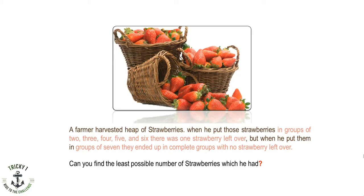A farmer harvested a heap of strawberries. When he put those strawberries in groups of two, three, four, five, and six, there was one strawberry left over. But when he put them in groups of seven, they ended up in complete groups with no strawberry left over. Can you find the least possible number of strawberries he had?